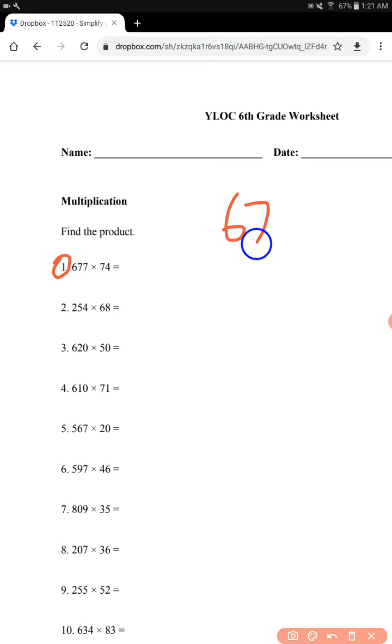So just long multiplication. 677 times 74. Starting off with the 1's place. 4 times 7 is 28. Then 4 times 7 again is 28, but then plus 2 equals 30. Then 4 times 6 equals 24, 24 plus 3 is 27.